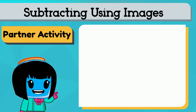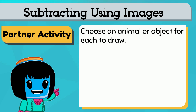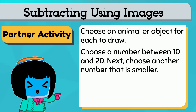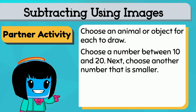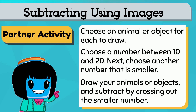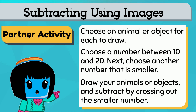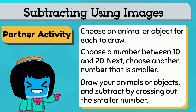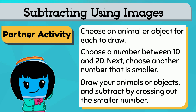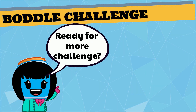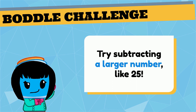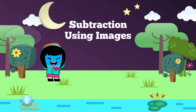You can also do this with a partner. Working with a classmate, you can each choose an animal or object to draw. Then choose a number between 10 and 20, and next choose a smaller number between 10 and 20. Draw your animals or objects and show subtraction by crossing out the smaller number. Show your partner and talk about how you did it. Ready for a more challenging subtraction game? Try subtracting a larger number like 25!